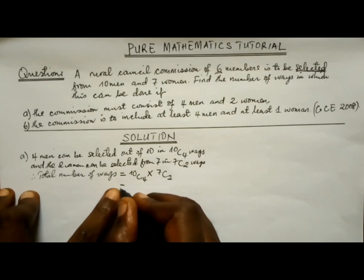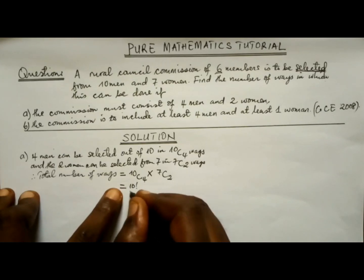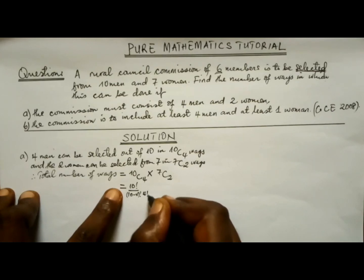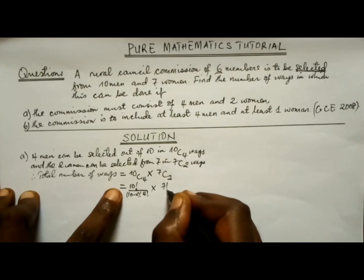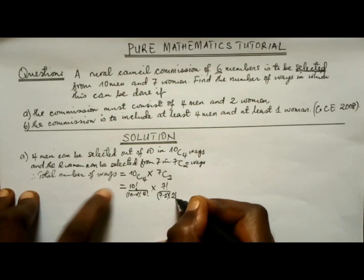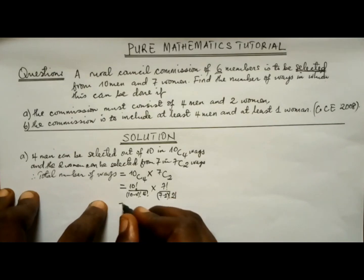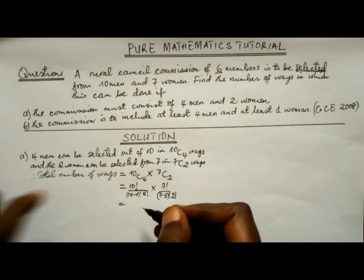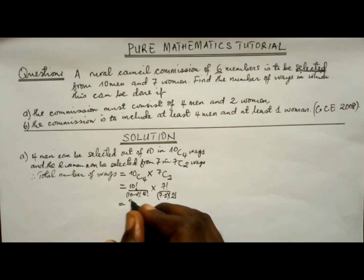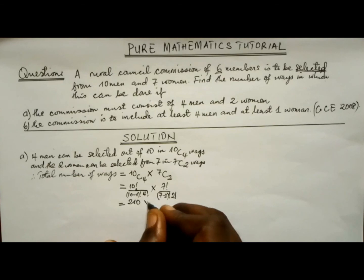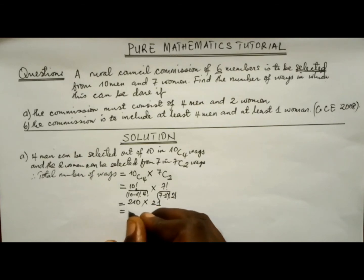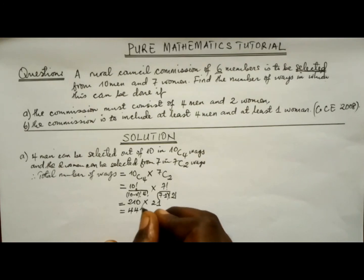Expanding the formula: 10C4 gives ten factorial over (10 minus 4) factorial times four factorial, and 7C2 gives seven factorial over (7 minus 2) factorial times two factorial. Simplifying using the calculator, 10C4 equals 210 and 7C2 equals 21, giving 210 times 21 equals 4,410 ways.